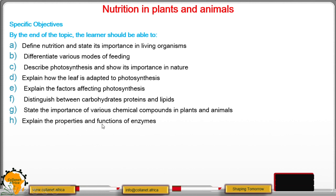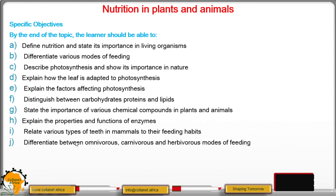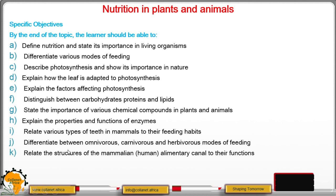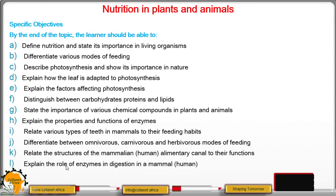You should also be able to explain the properties and functions of enzymes, relate various types of teeth in mammals to their feeding habits, differentiate between omnivorous, carnivorous, and herbivorous modes of feeding, relate the structures of the mammalian alimentary canal to their functions, explain the roles of enzymes in digestion in a mammal, and explain the factors that determine energy requirements in humans.